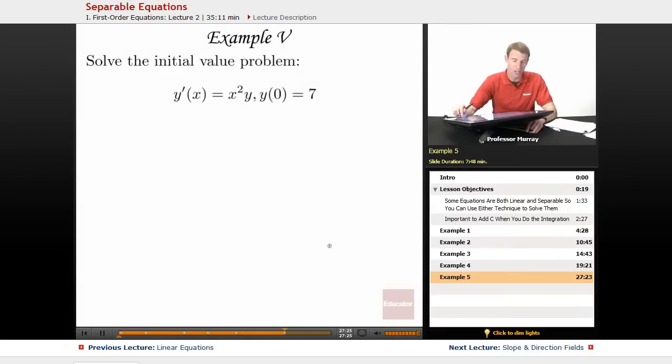Alright, we've got one more example here. Example 5 is to solve the initial value problem y prime of x is equal to x squared y, and y of 0 is equal to 7.